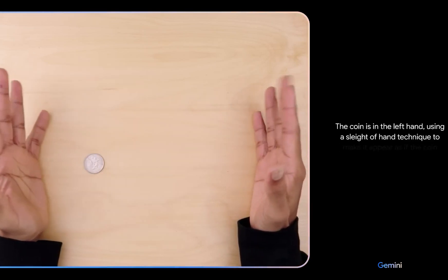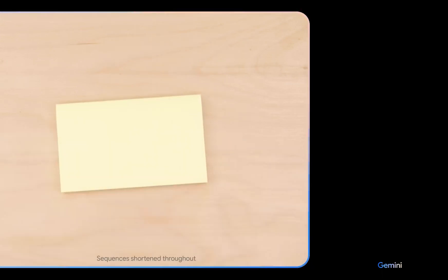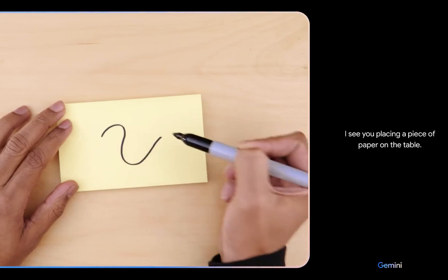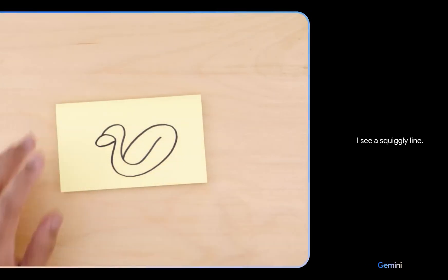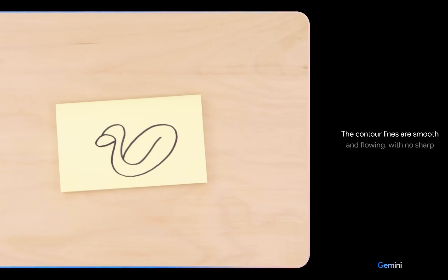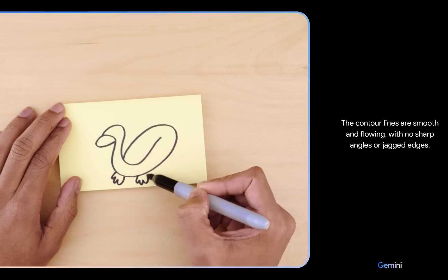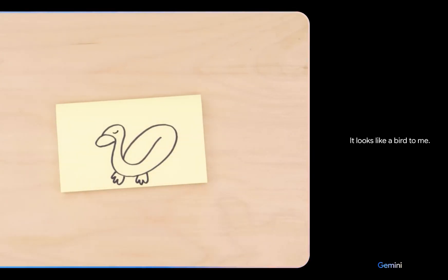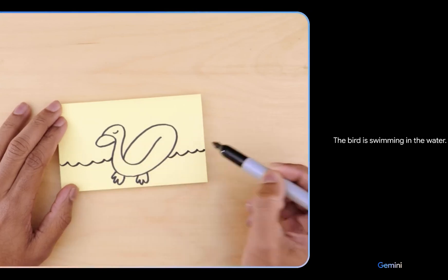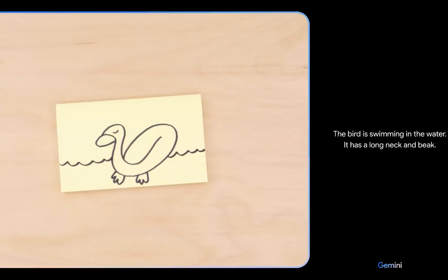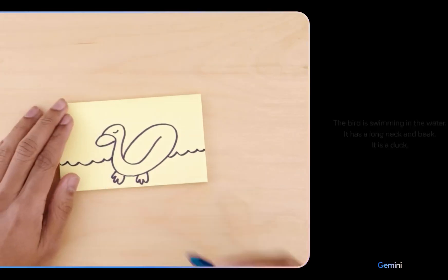Tell me what you see. What about now? The contour lines are smooth and flowing with no sharp angles or jagged edges. It looks like a bird to me. What if I add this? The bird is swimming in the water. It has a long neck and beak. It is a duck.